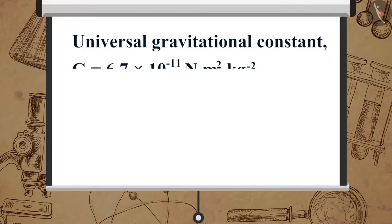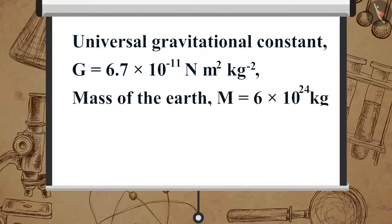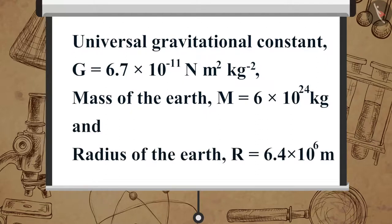Universal gravitational constant G is equal to 6.7 multiplied by 10 raised to minus 11 Newton meter square per kilogram square. Mass of the Earth, M is equal to 6 multiplied by 10 raised to 24 kilograms and radius of the Earth, R is equal to 6.4 multiplied by 10 raised to 6 meters.